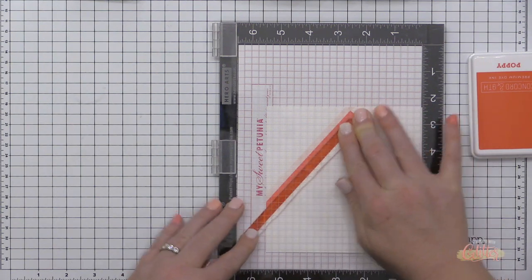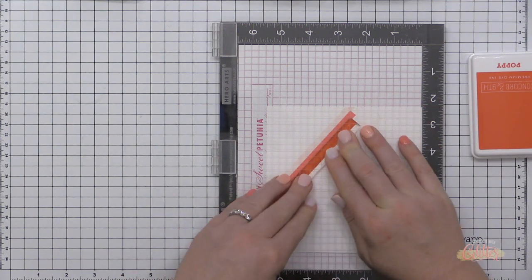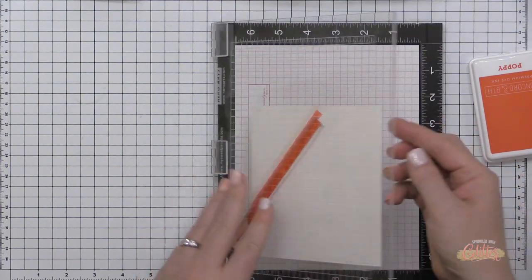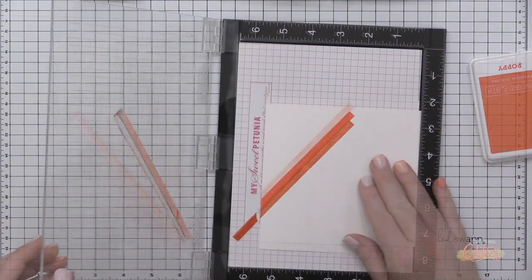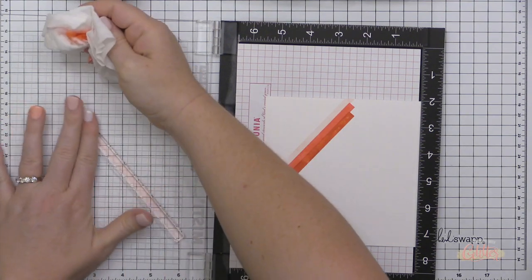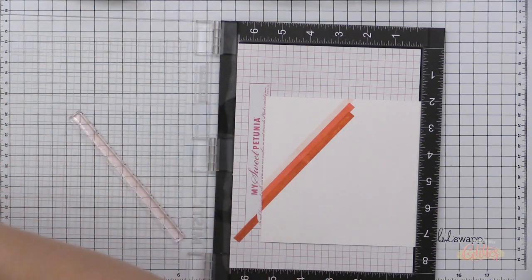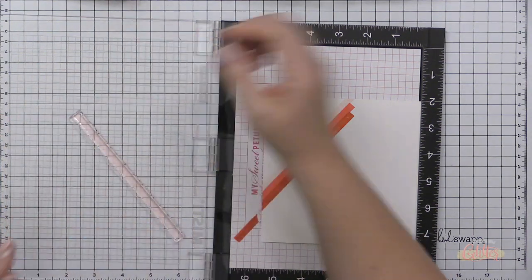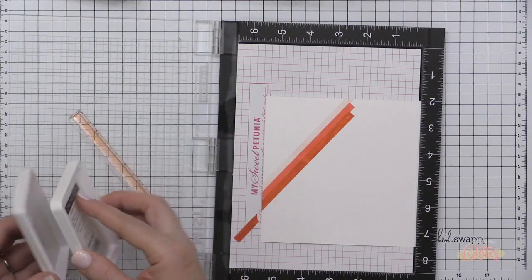I am creating this pattern so that they're all connected. You could absolutely space these out and leave some white between them, but I wanted as much color as I could possibly get. So I started with ballet slipper, then I moved to honeysuckle, then poppy, and now I'm going to grapefruit.